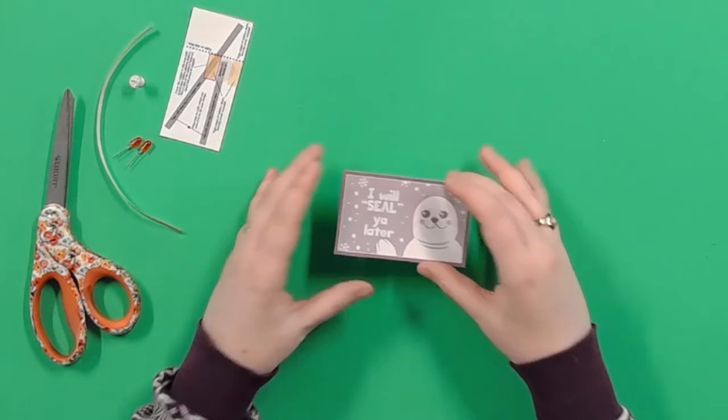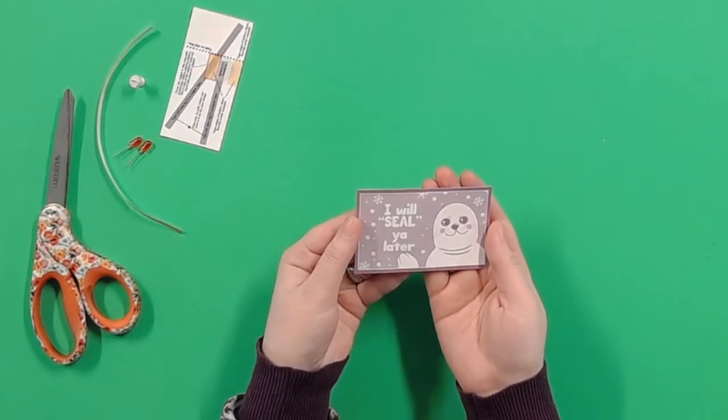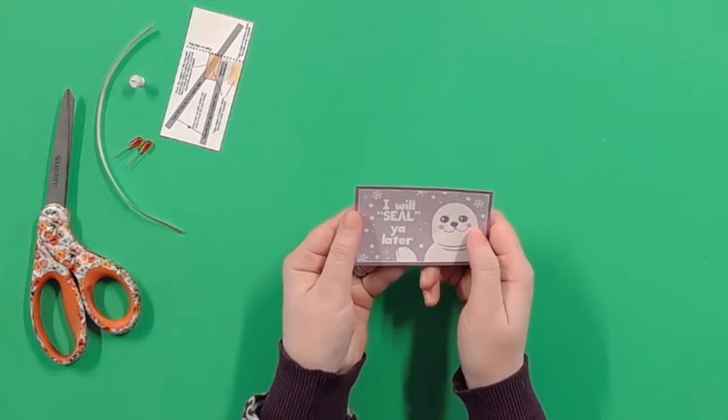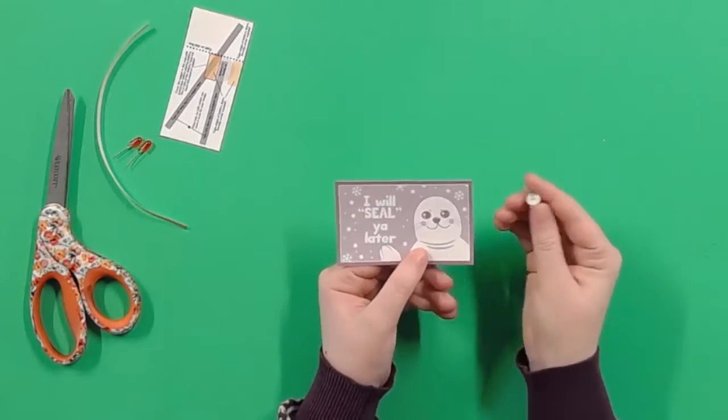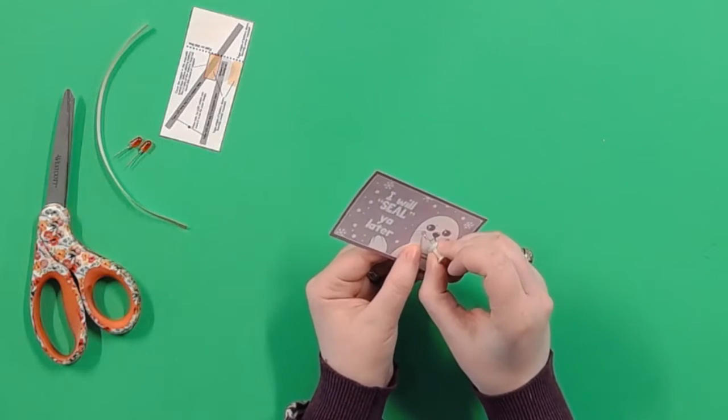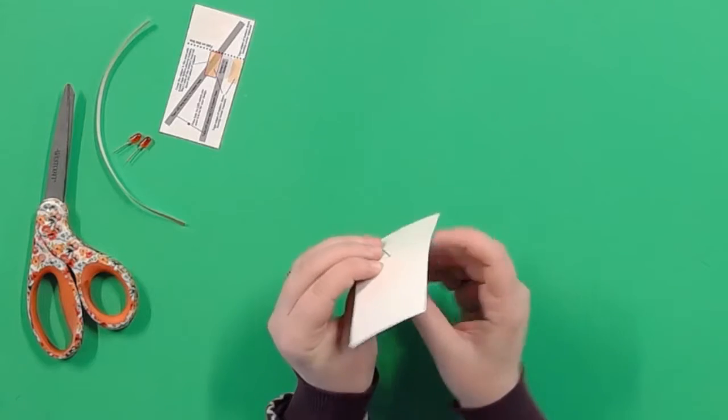First, decide where your lights will go on your card. I'm going to take these red LEDs and make them the blushing cheeks of this little seal. Poke a hole in the card where you want to put your lights. I'm using a thumbtack, but you could also use a sharp pencil, a needle, or ask an adult for help.